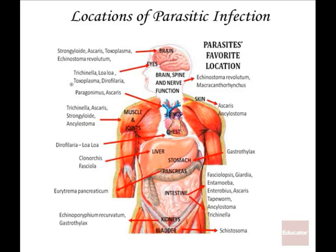These parasitic infections are pretty ubiquitous throughout the human host, and they can lodge and remain for very long periods of time. Many of these parasites are worms. An interesting one is Ascaris, which is a type of worm that can live in quite a few different places — on the skin, unfortunately in the brain, in the heart, in the lungs, and in the intestine.